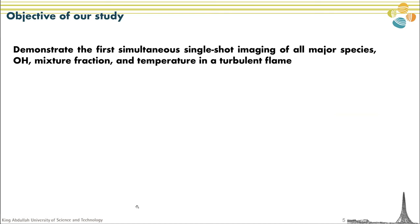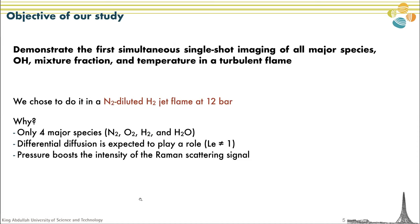This gives the objective of our study. We wanted to demonstrate the first simultaneous single-shot imaging of all major species, OH, mixture fraction, and temperature in a turbulent flame without having to make strong assumptions. We chose to do this in a nitrogen-diluted hydrogen jet flame at 12 bar. This is a first attempt, and hydrogen only has four major species: nitrogen, oxygen, hydrogen, and water. Differential diffusion will play some role, which is a nice way to ensure the previous technique would not work. And elevated pressure boosts the intensity of the Raman signal, so going to 12 bar is useful.